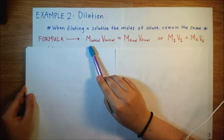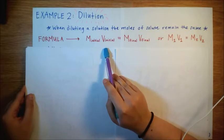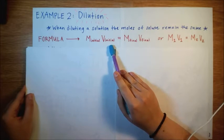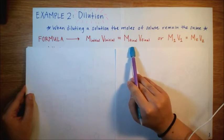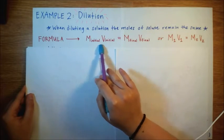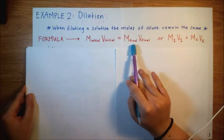Now your M is just your molarity, V is volume. So your initial molarity times V is equal to your final molarity times V. So this is going to be for solution 1 and this is solution 2.